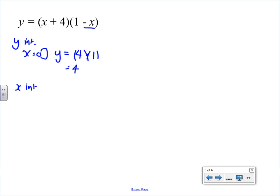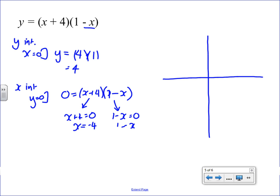So, x-intercepts. So, x-intercepts when y is 0, so 0 equals x plus 4 and 1 minus x. So, x plus 4 is 0, x is minus 4, or 1 minus x is 0, so x is 1. Exactly. So, we've got 4 there, minus 4, and 1. So, you can see the shape already. You can see it's going to go like this.